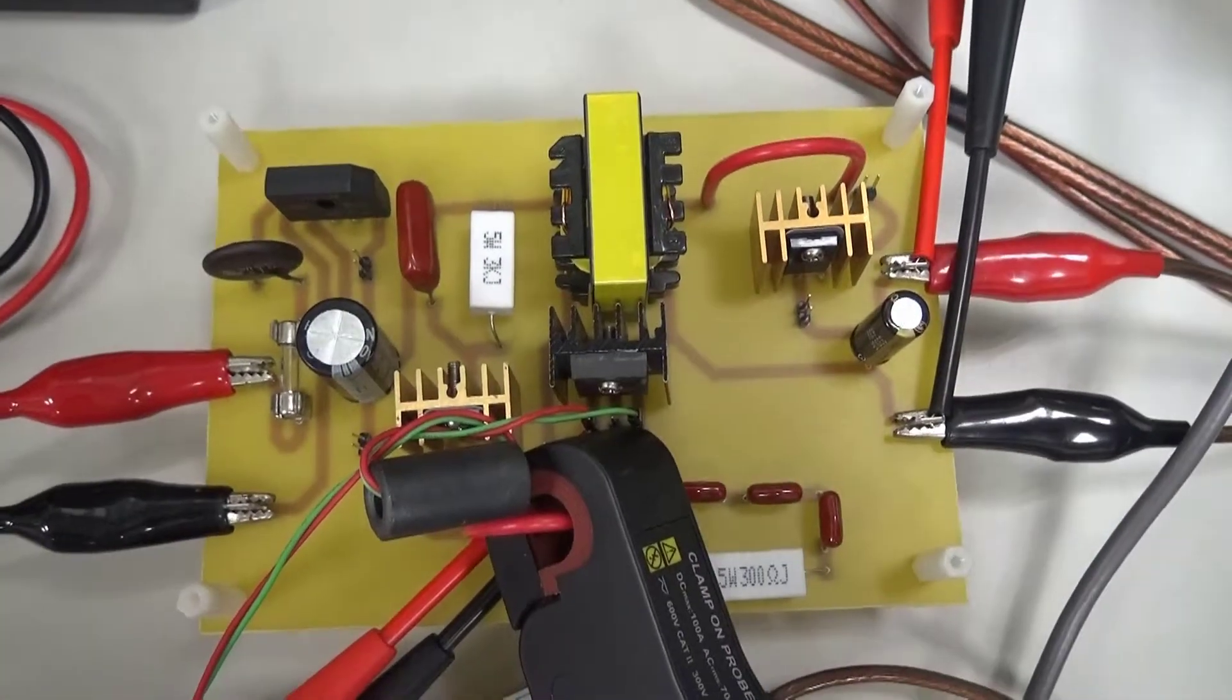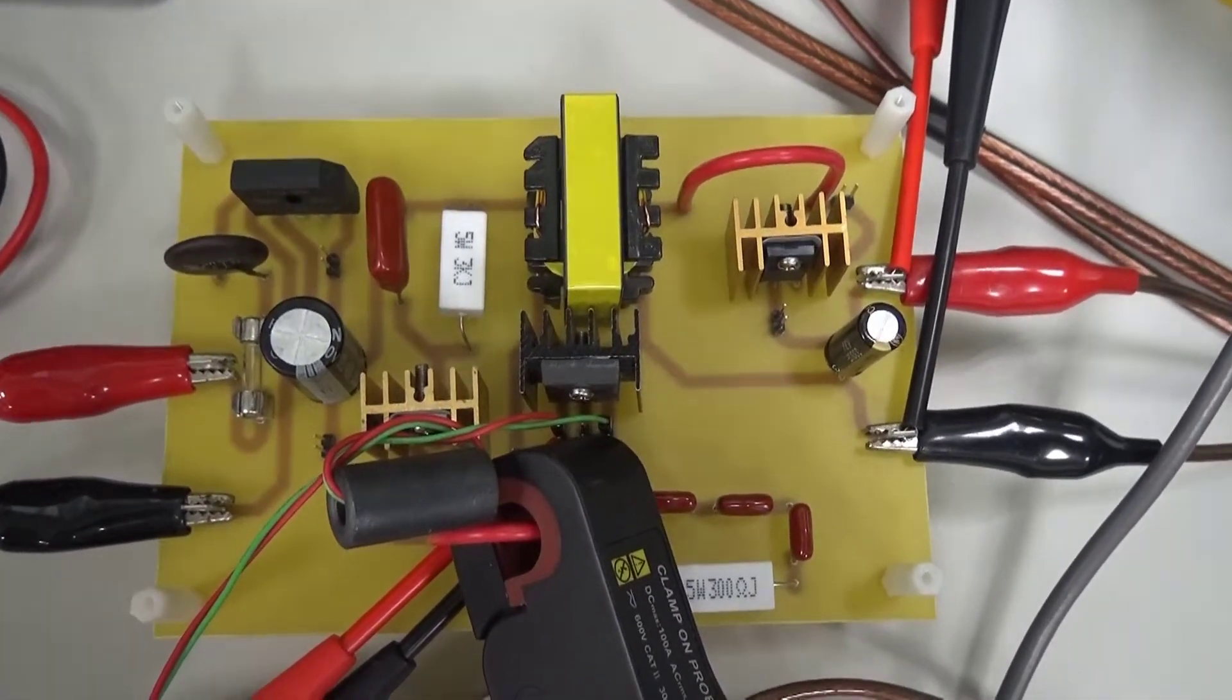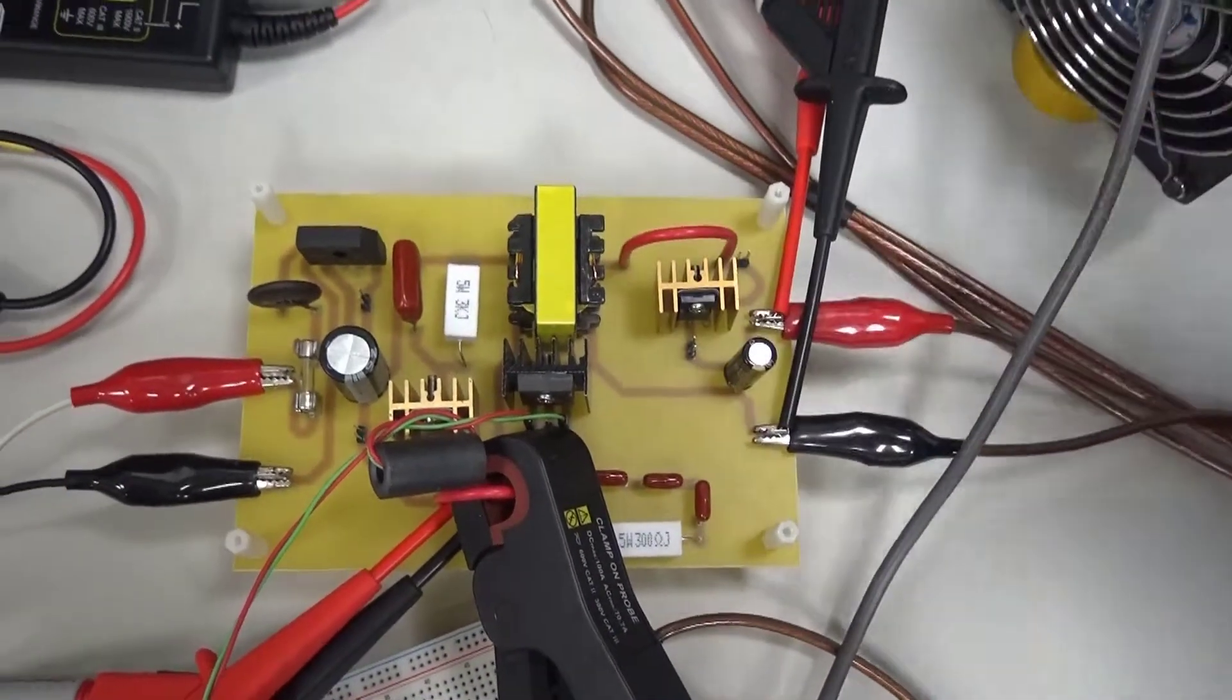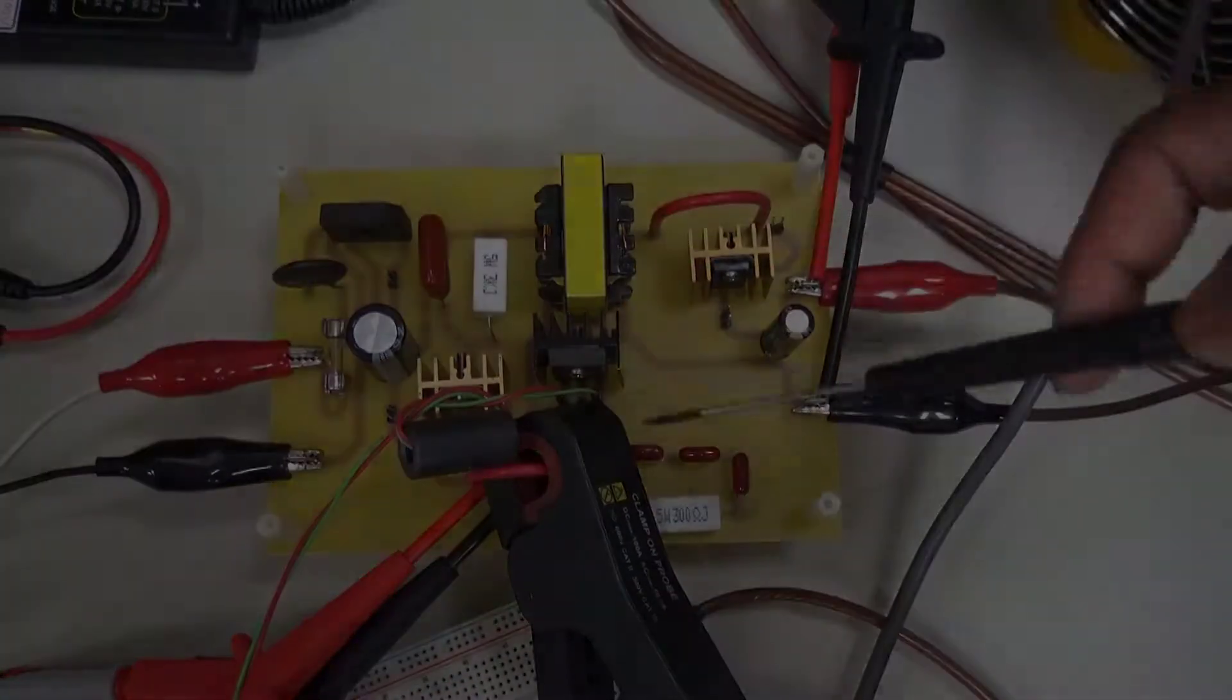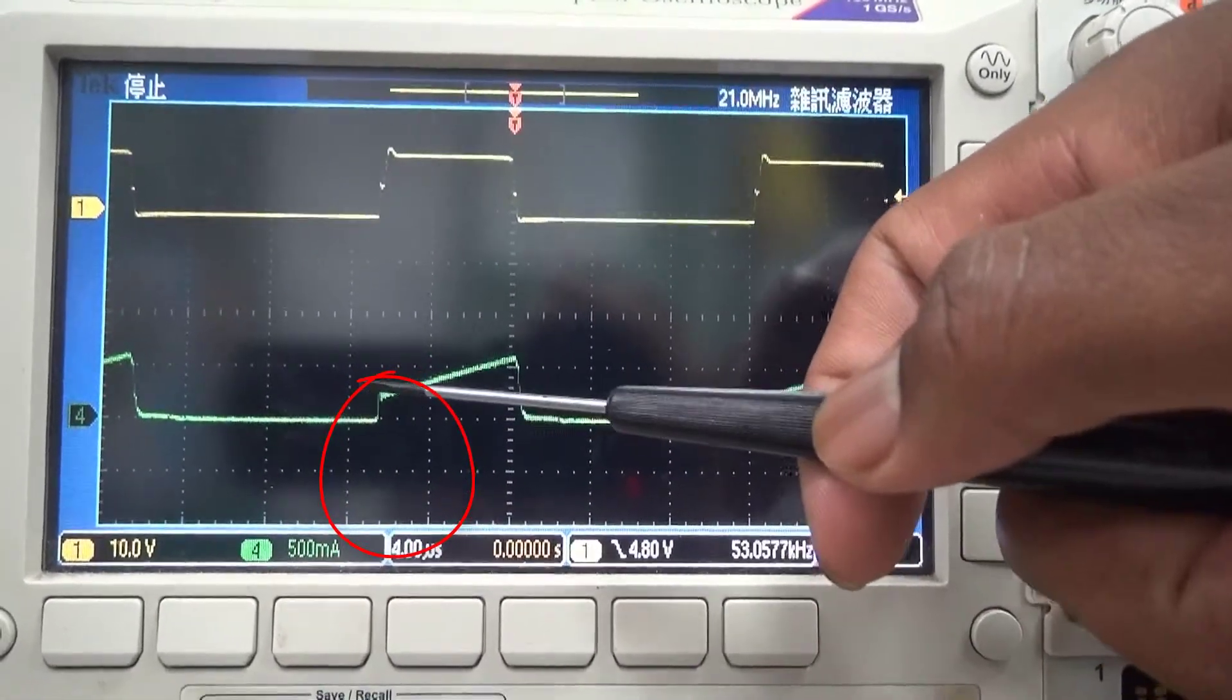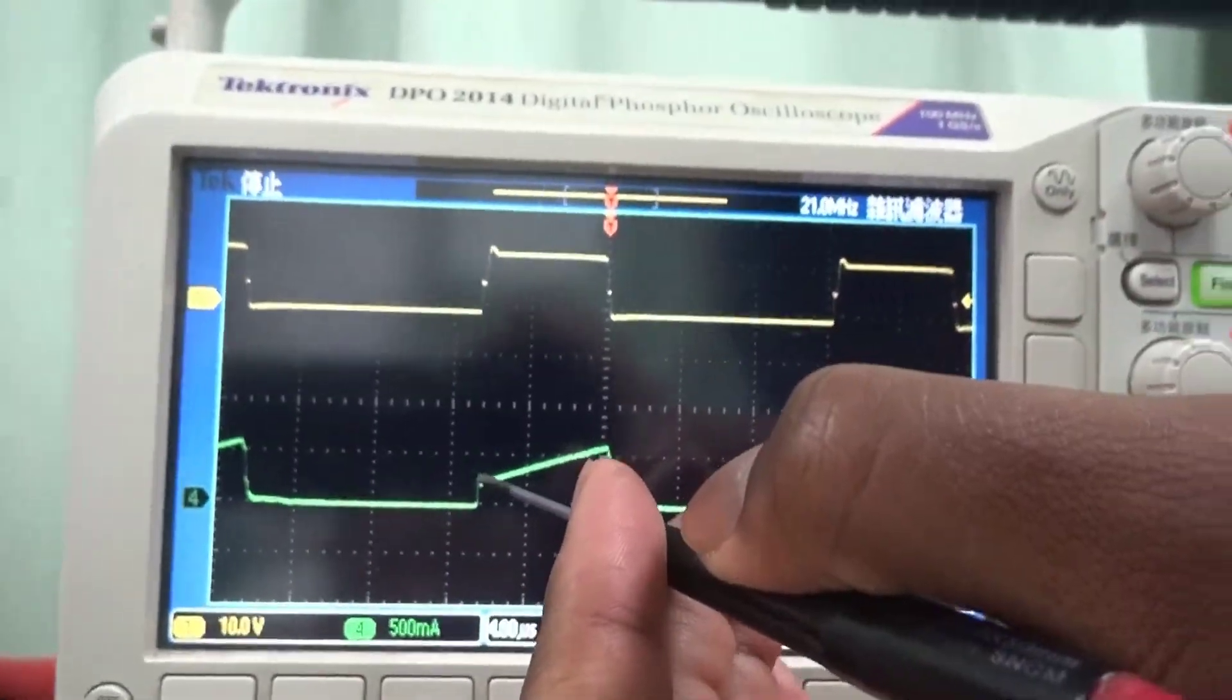Here we have our circuit configured for the measurement of IDS. Since we are unable to measure the theoretical magnetization inductance, we will use IDS as an indication as to whether we are in CCM or not. As seen right here, since the initial current during the ON state is not zero, we are indeed in CCM.